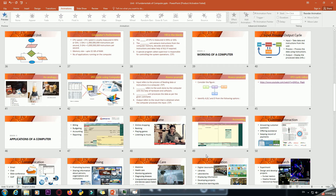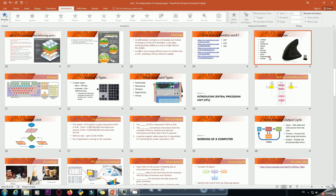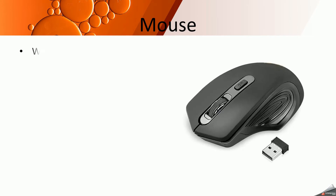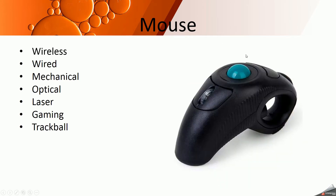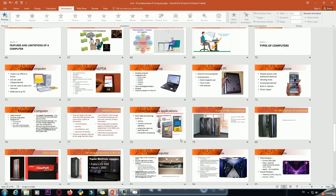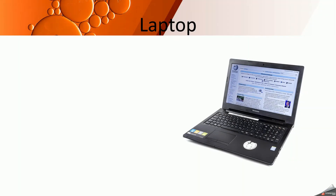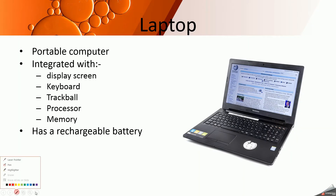A trackball is a stationary device. You don't move it to move the mouse pointer — you only rotate the ball using your fingertip. It comes with additional buttons for point-and-click, drag-and-drop, and drawing operations. It is very suitable in places where you don't have much space. Laptops also come with an integrated touchpad where you can move your fingertip and the mouse pointer moves on the screen.